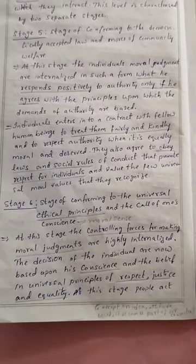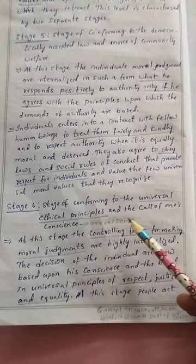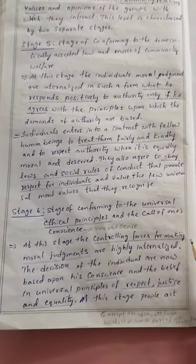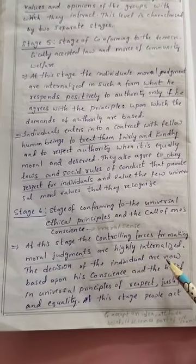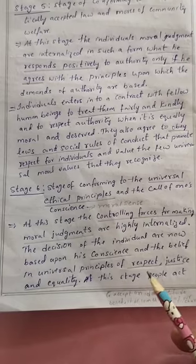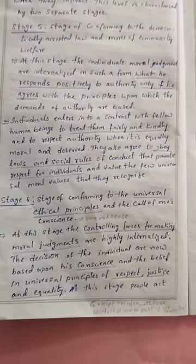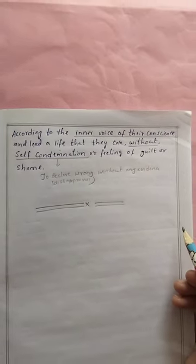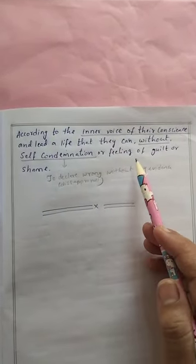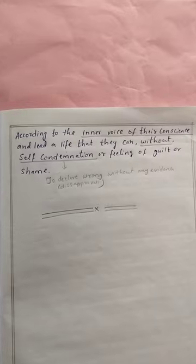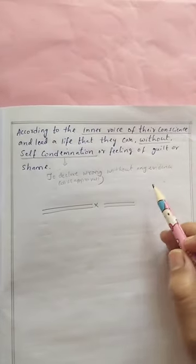Stage 6 is the stage of conforming to universal ethical principles and the call of one's conscience — 'conscience' meaning moral sense. At this stage, the controlling force for moral judgments is highly internalized. Decisions are based on conscience and belief in universal principles of respect, justice, and equality. 'Internalized' means to accept an idea or belief such that it becomes part of one's character. People act according to their inner voice and lead a life without self-condemnation, guilt, or shame.